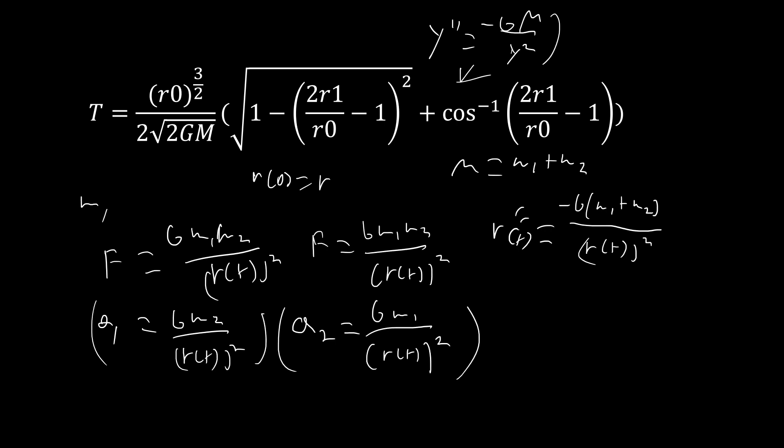So we can plug into this formula for t, m equals m1 plus m2, and r1 equals zero, and r0 is the same thing, it's just the starting position however far away they are, so r0 equals r.